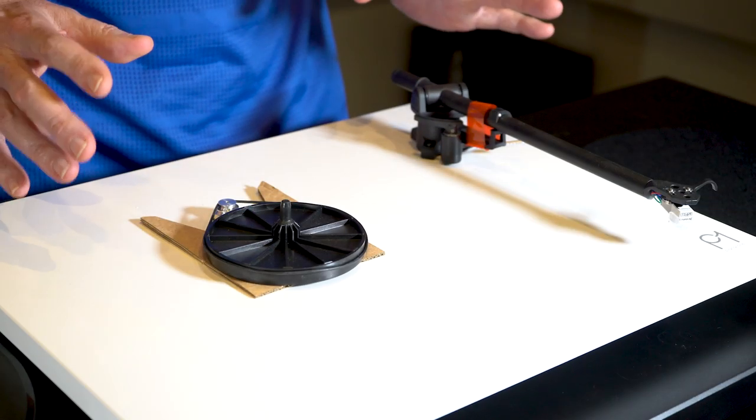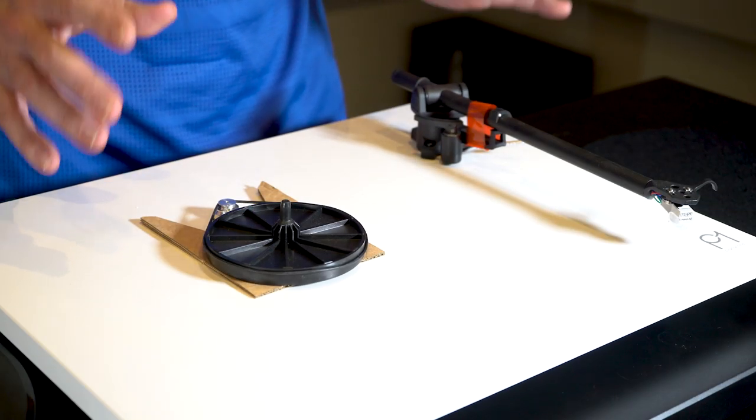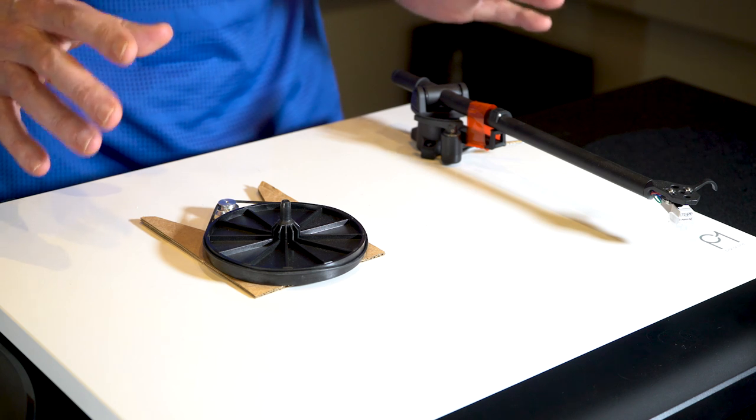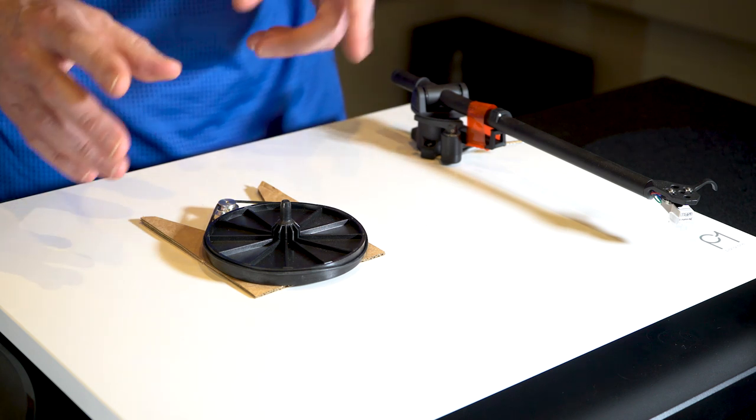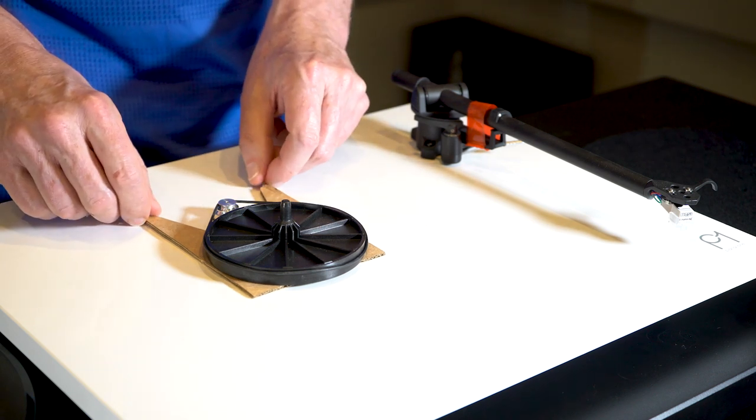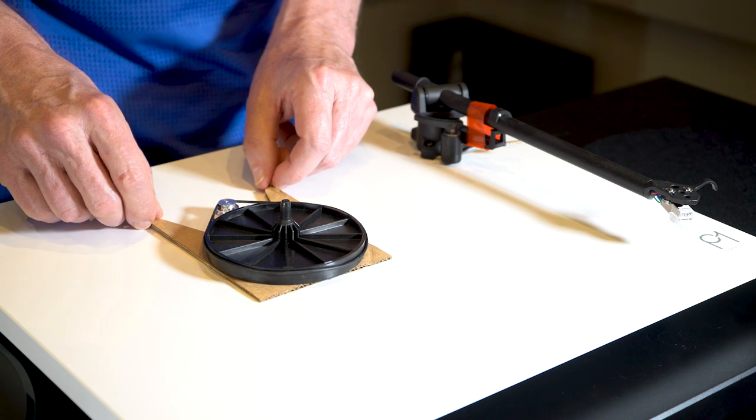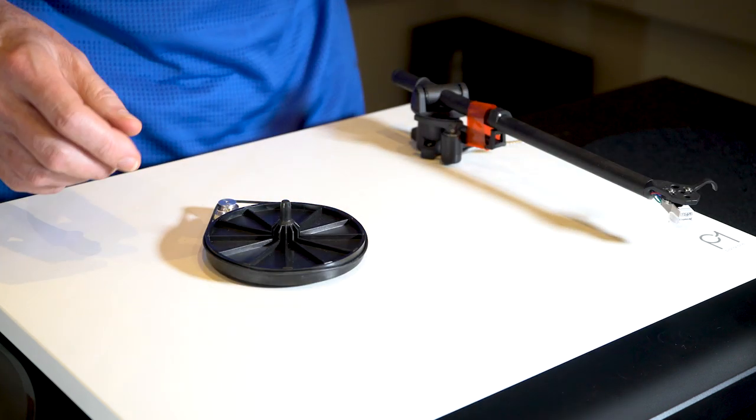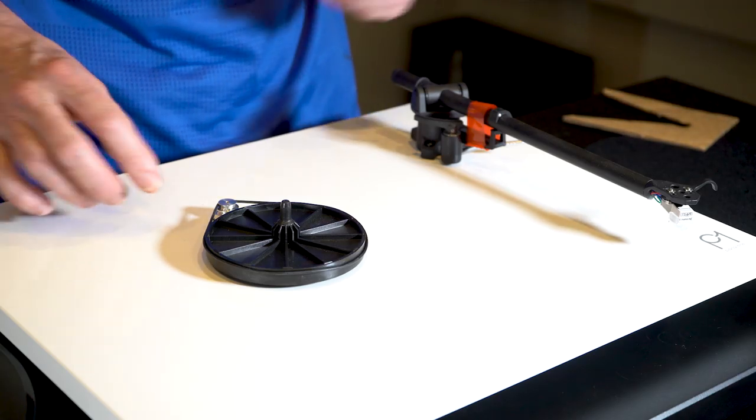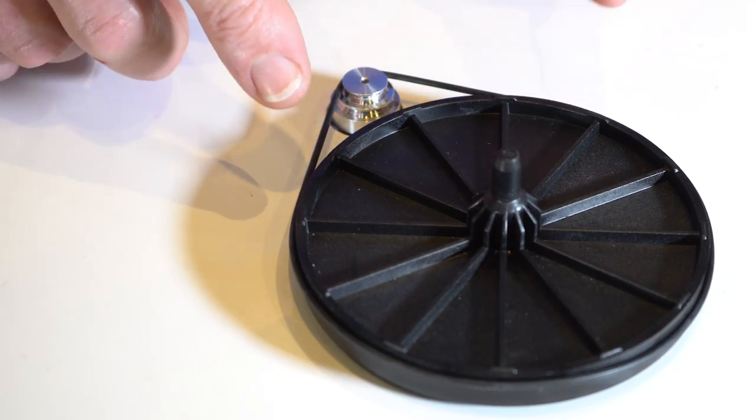We've got our turntable out of the box and we're ready to go. We'll tell you the best place to put your turntable once we're done with the video. But the first thing you want to do, there's a cardboard protection piece that protects the bearing of the inner platter. Just pull this out and set that aside. You'll want to keep that if you have to move your turntable. Make sure the belt is on the top pulley. It should be.